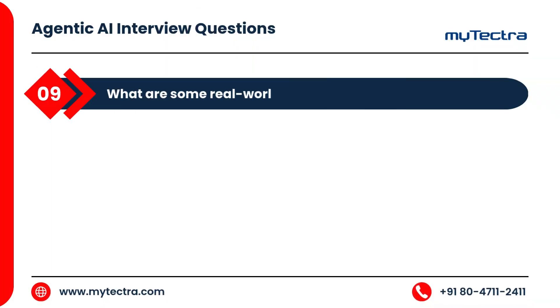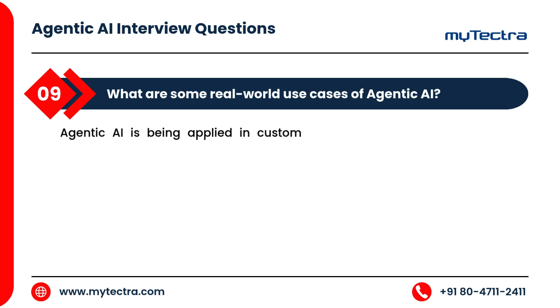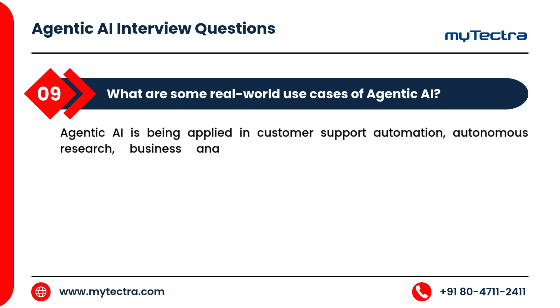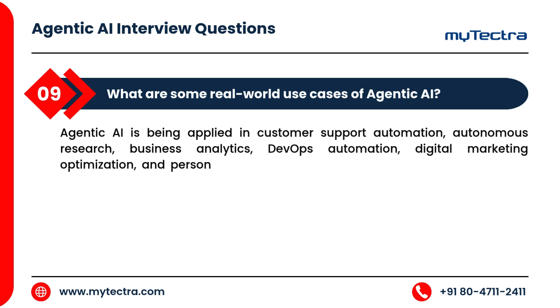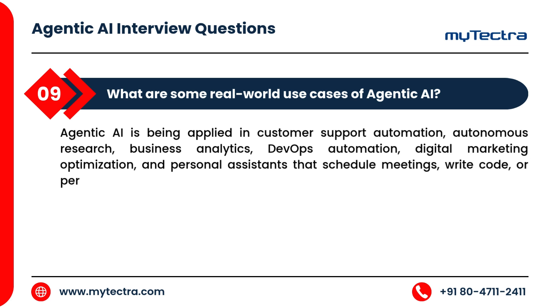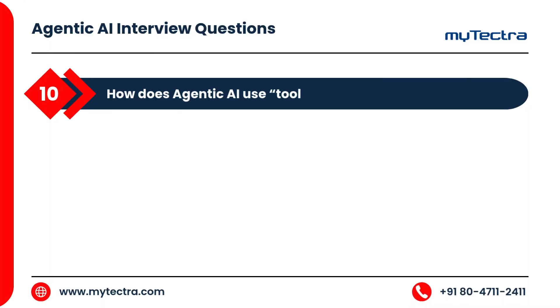What are some real-world use cases of agentic AI? Agentic AI is being applied in customer support automation, autonomous research, business analytics, DevOps automation, digital marketing optimization, and personal assistance that schedules meetings, writes code, or performs market analysis without constant supervision.